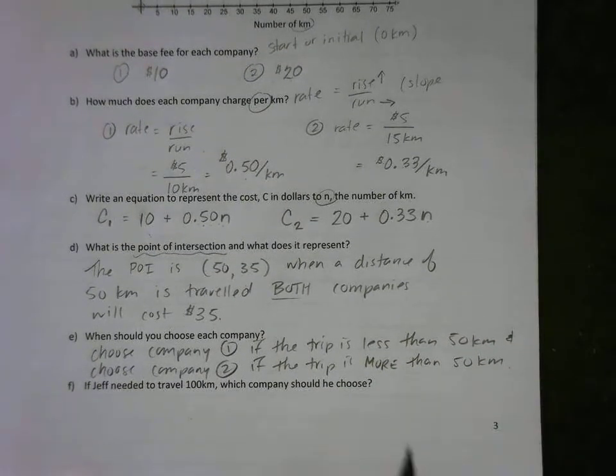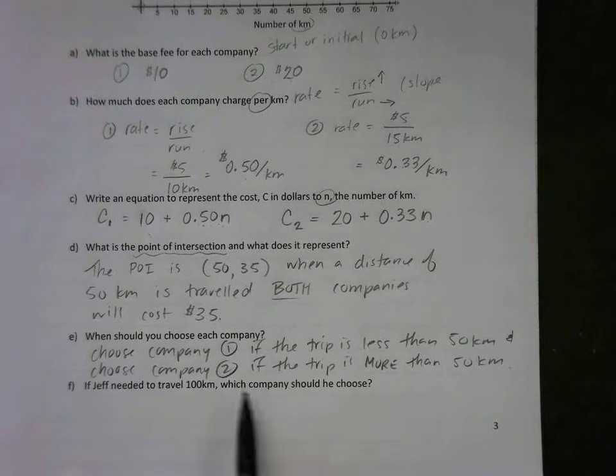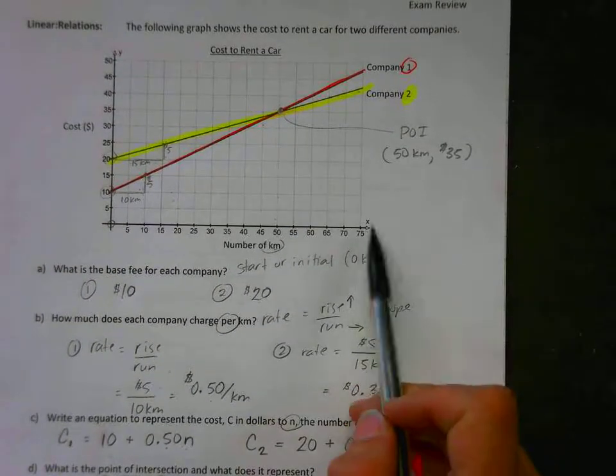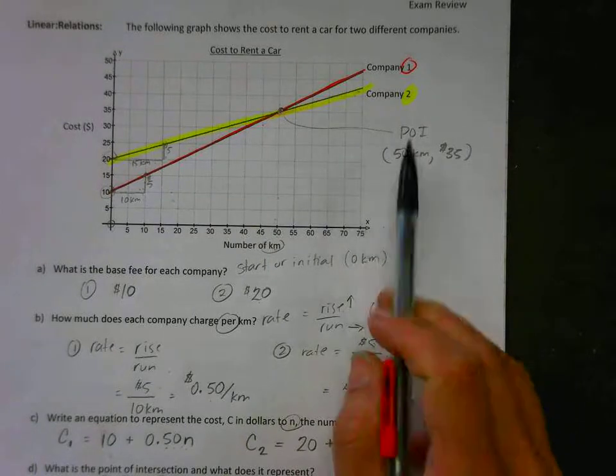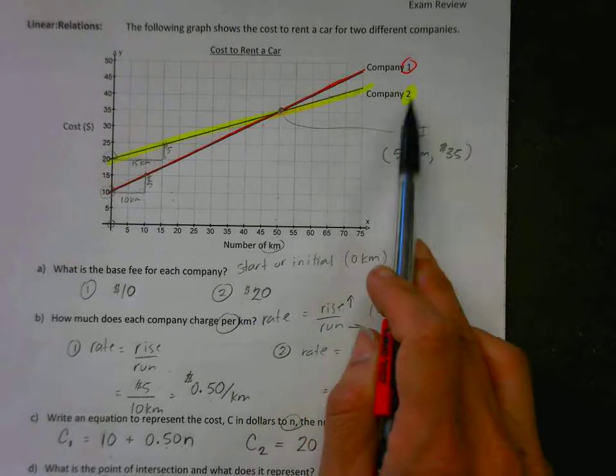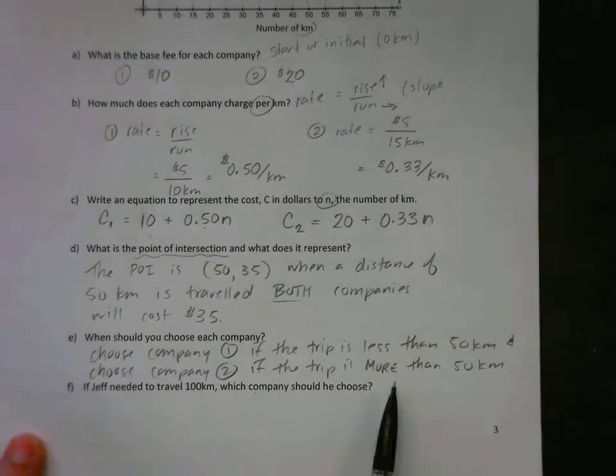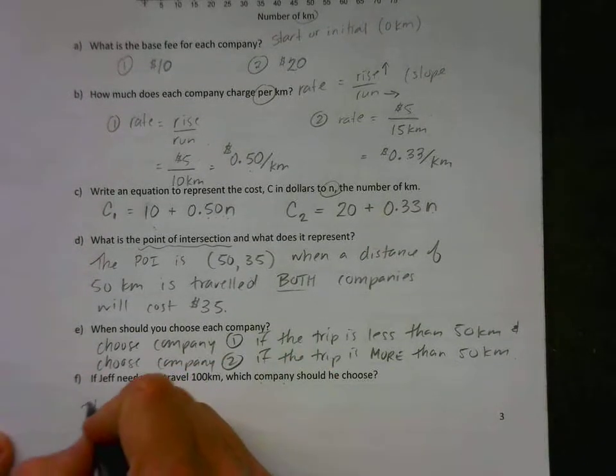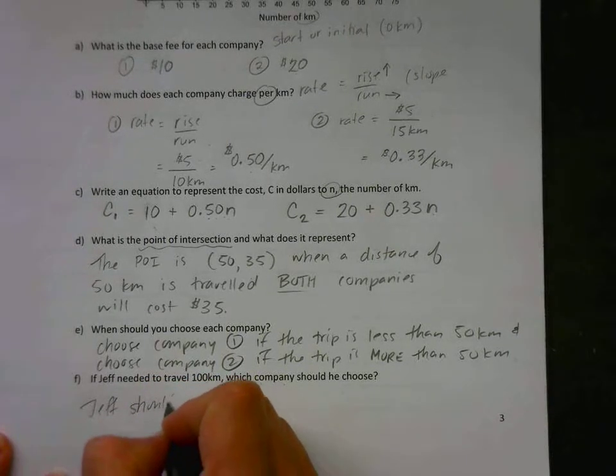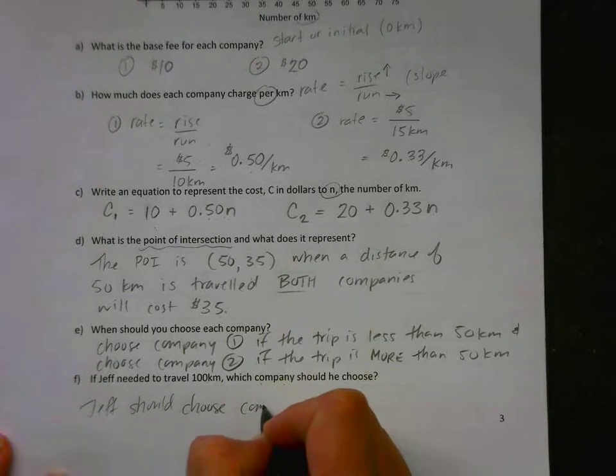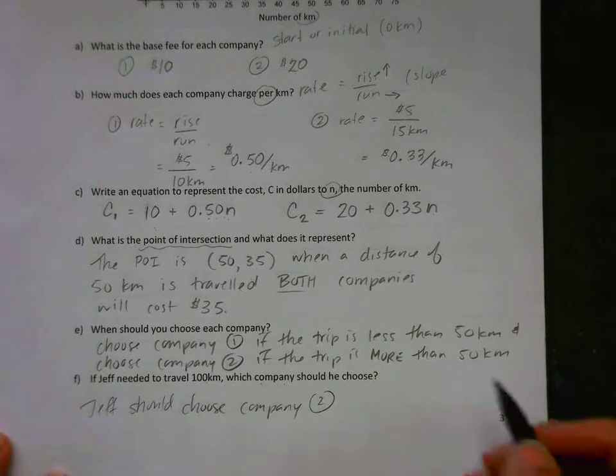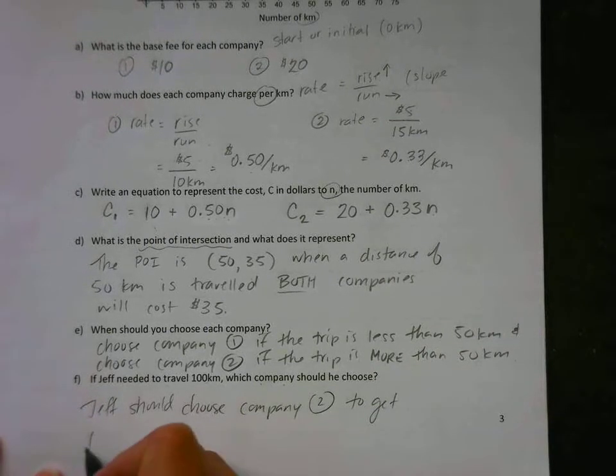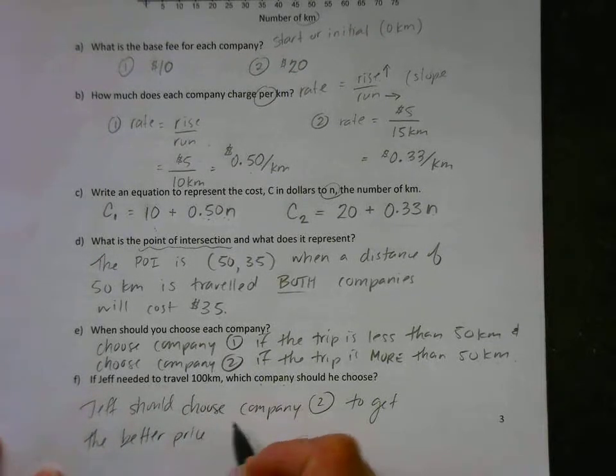So we can use this idea: if Jeff needed to travel one hundred kilometers, which company should he choose? Now if you go ahead and look at the graph, it doesn't go beyond one hundred kilometers, but this one is lower than that one after here, so we should go with company two. It also works with what we said here: if the trip is more than fifty kilometers, even though it's not on the graph, we know this one will be less. So Jeff should choose company two to get the better price for a trip of one hundred kilometers.